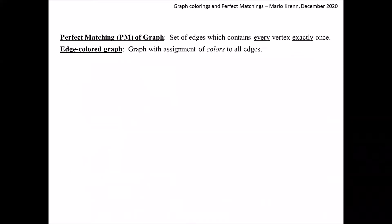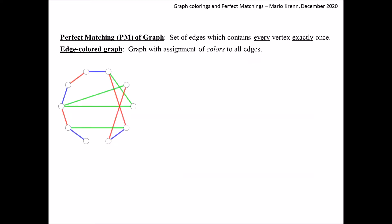The second concept we will use are edge-colored graphs. As the name suggests, these are graphs with an assignment of colors to every edge. Let's take this graph as an example — it has blue, red, and green edges. And as before, we can now also calculate its perfect matchings. Here they are, and of course the perfect matchings now also have colored edges.